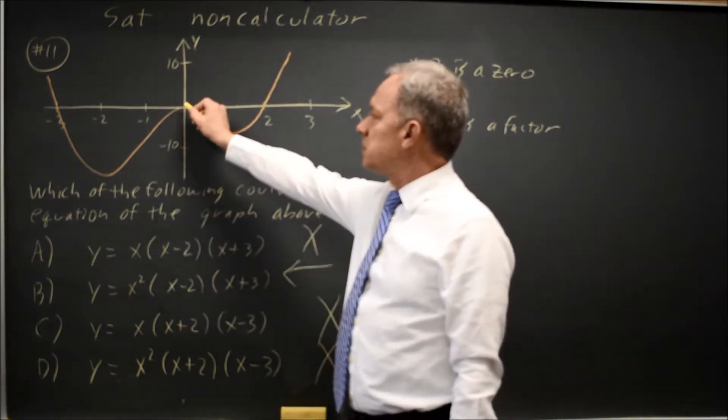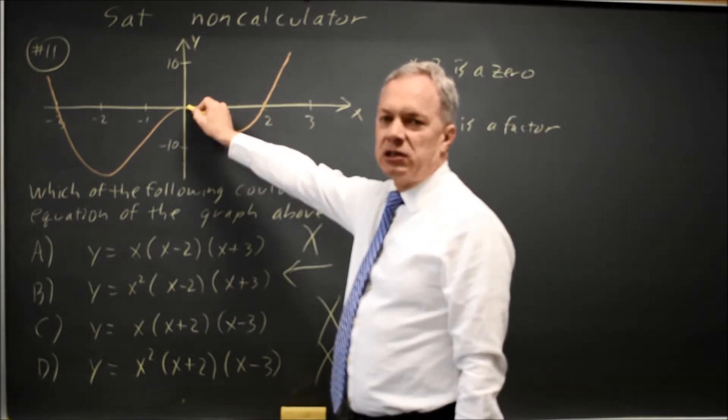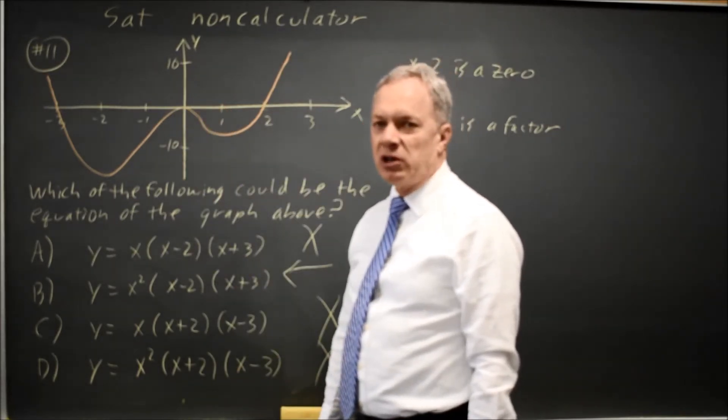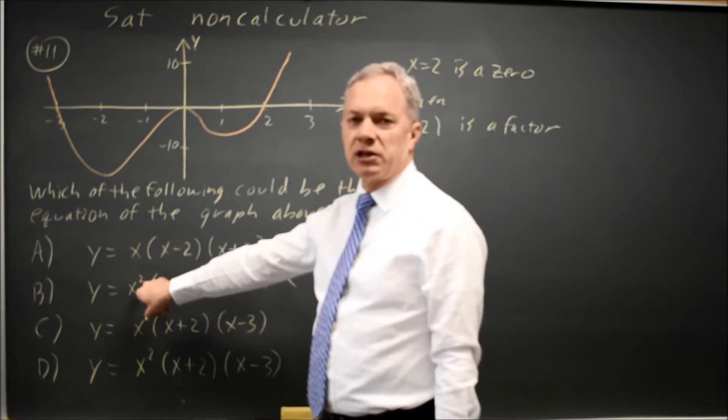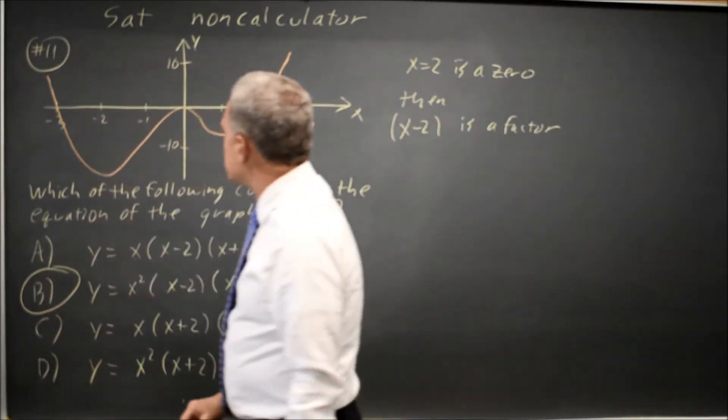Alternatively, the zero at x equals 0 does not actually cross through the axis. If you touch the axis without crossing for a polynomial, you must have an even exponent. So this would be x squared or x to the fourth as possible equations. Either way, the correct answer is B.